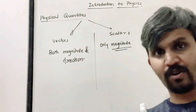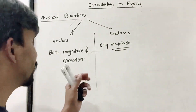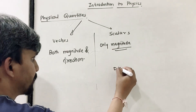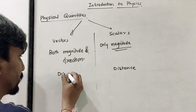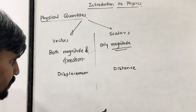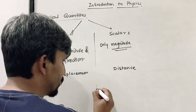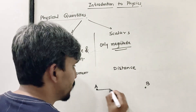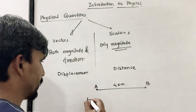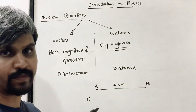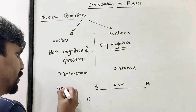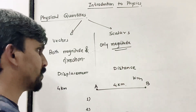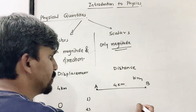Now we will discuss distance and displacement. Displacement is a vector and distance is a scalar. Suppose point A is Borebri and point B is Kandivli, with a distance of 4 km. If I travel from Borebri to Kandivli, both distance and displacement are 4 km. But if I go from Borebri to Kandivli and come back to Borebri, my displacement is 0 but distance is 8 km.